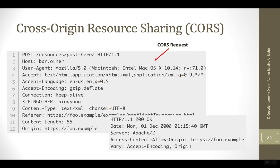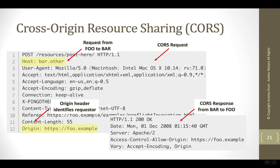If we were to look at the actual request and response going back and forth on the wire, it would look something like this. In this scenario, we have a user interface running in the foo domain reaching out to the bar domain. So the destination is bar.other, and in the request we will see a request header named origin that identifies foo.example as the caller. In the response coming back from the server, the server includes an Access-Control-Allow-Origin header with not only the exact value of the domain — foo.example — but also the scheme, in this case HTTPS.